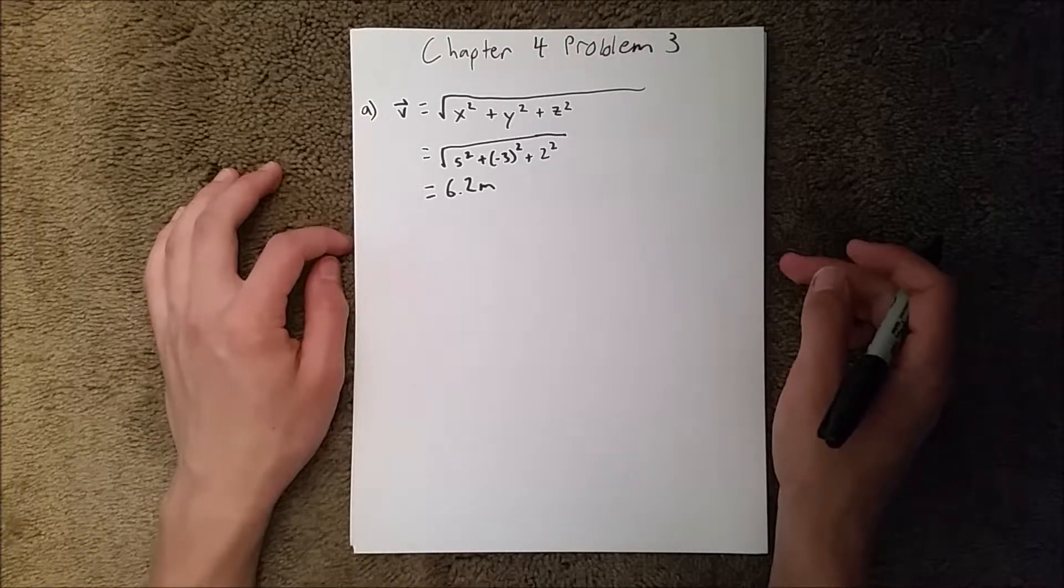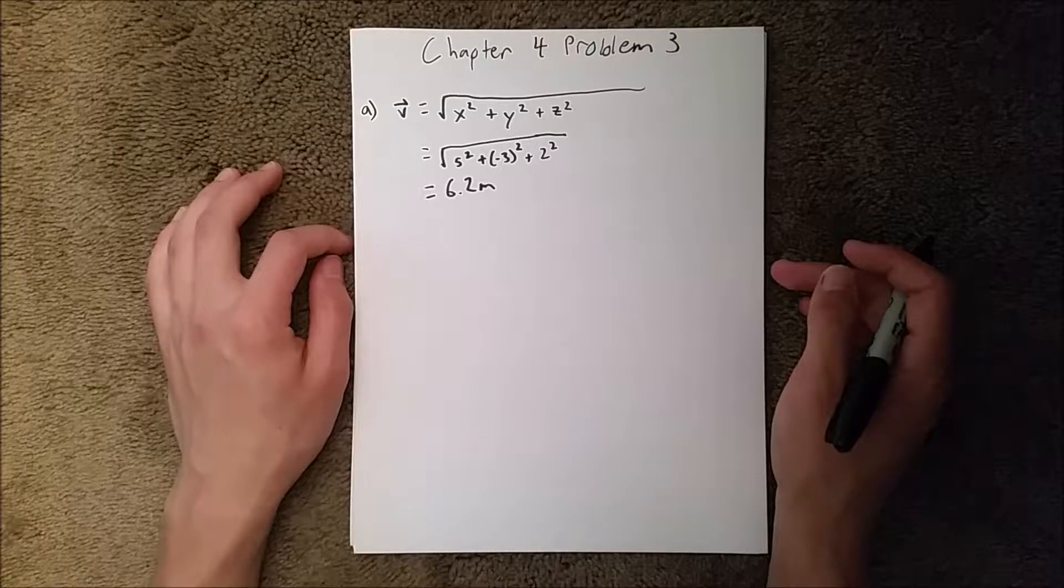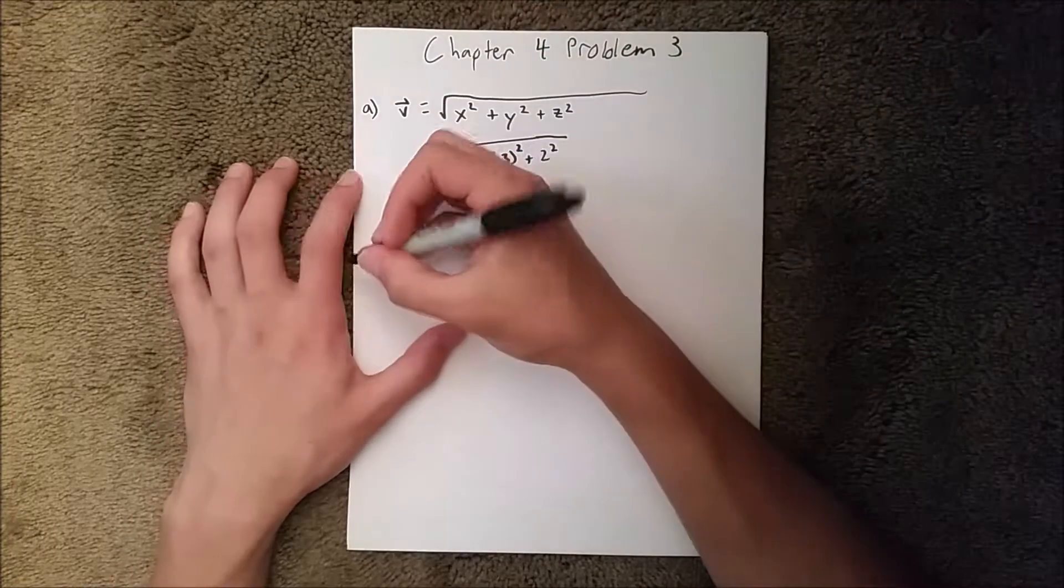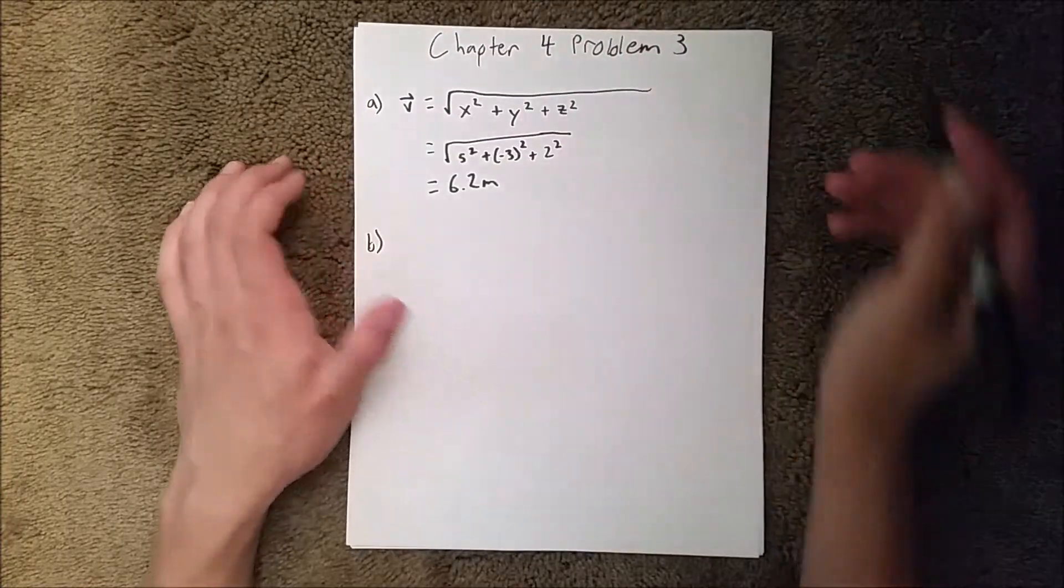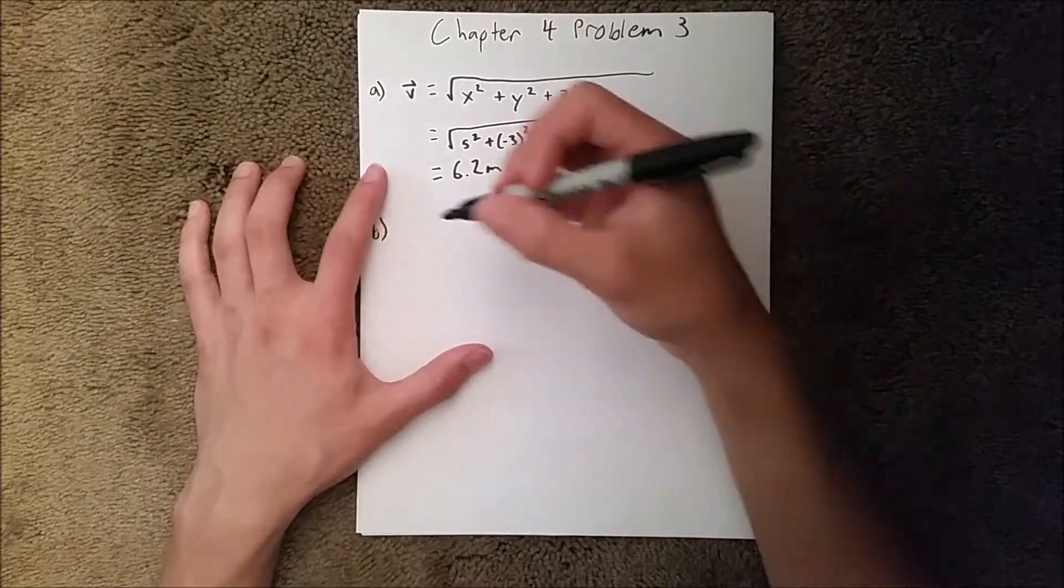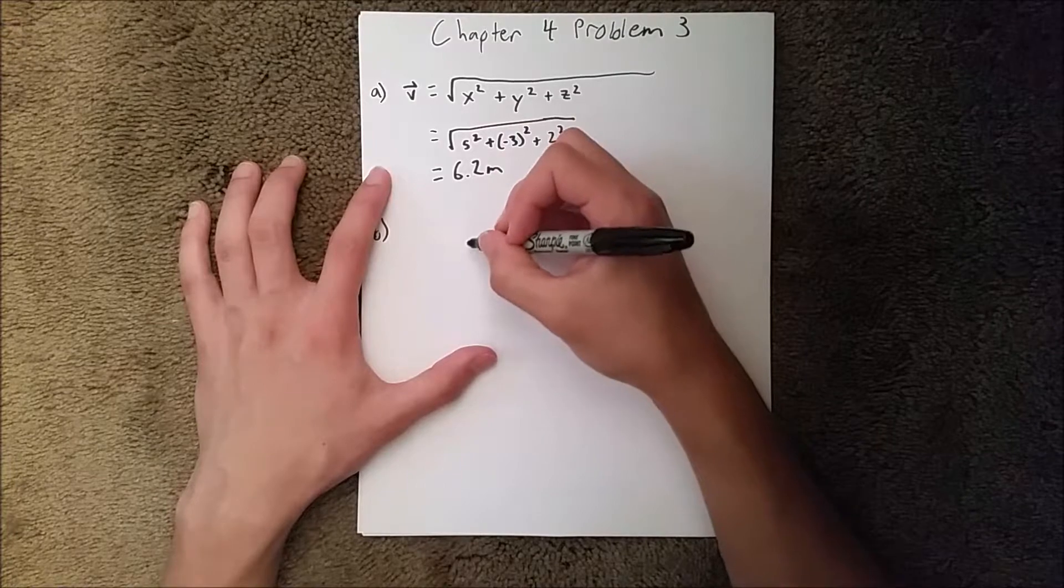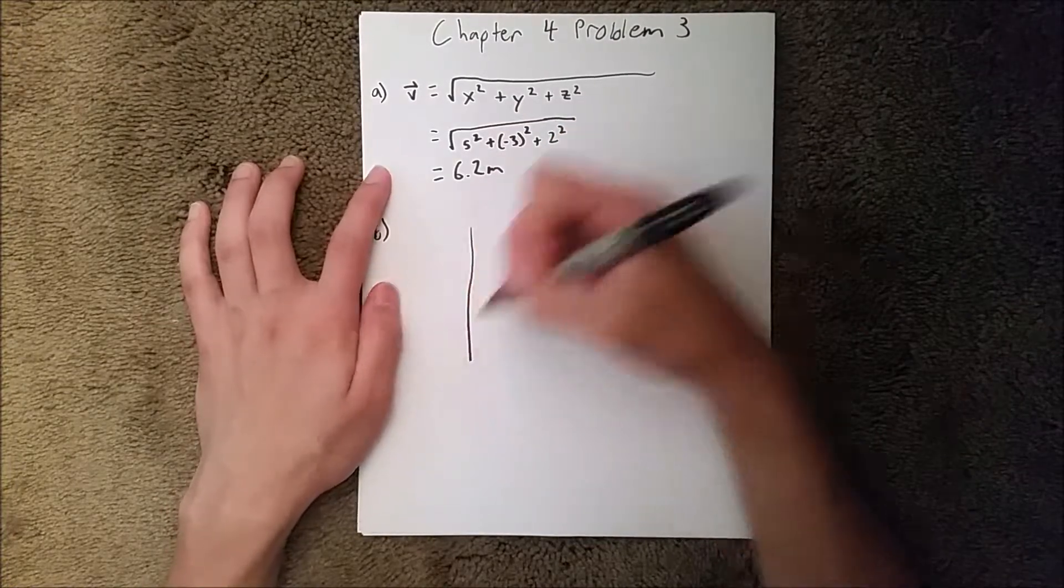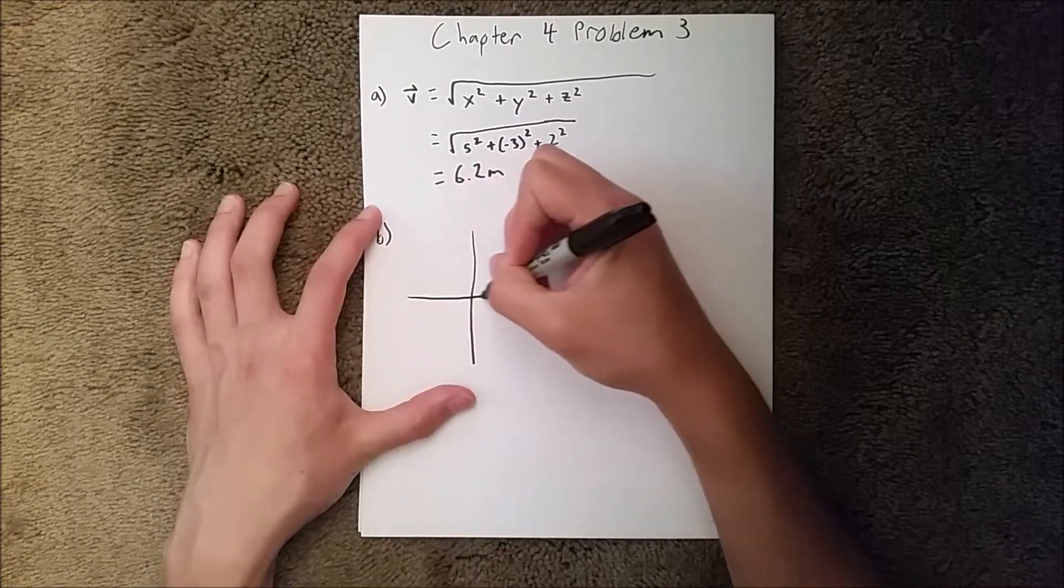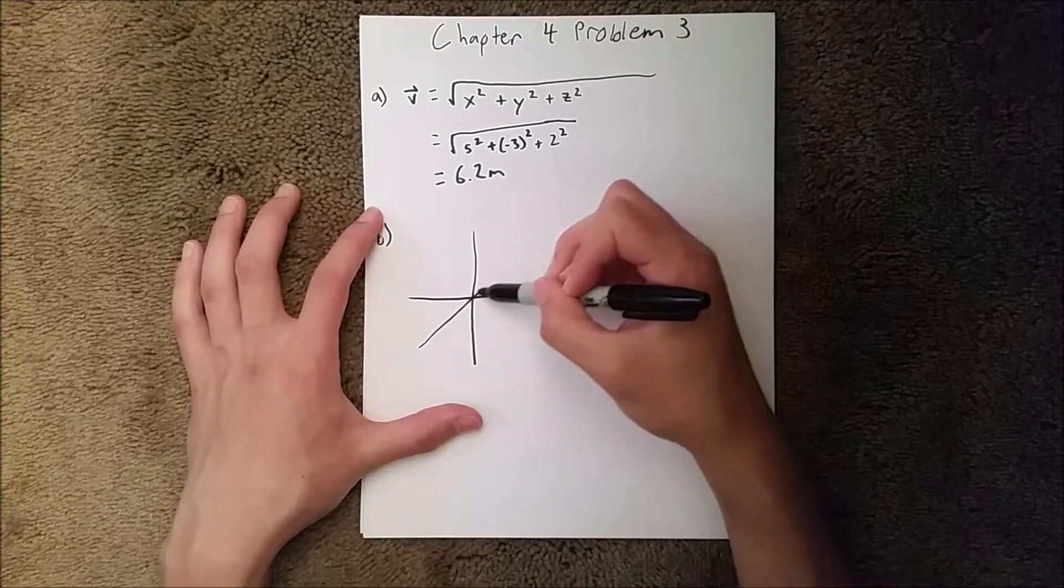And then Part B asks us to sketch the vector. And so what we're going to do, now this is going to be a little tough since it's three dimensional and it's kind of hard to draw, but I would do my best. So we have our y-axis, that's a very bad line, but whatever. And then we have our x-axis, and then our z will go like that.